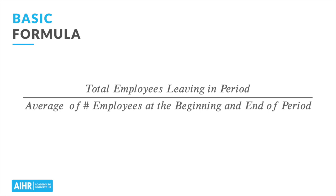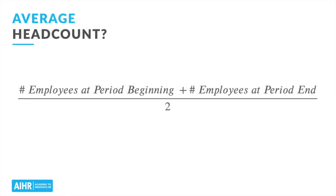Before we work through some examples, I want to focus for a minute on that headcount calculation — the bottom part of our formula — where we're dividing by the average number of employees. Those new to HR analytics often find this step in turnover calculation confusing at first. So let's focus first on that calculation of the average itself. The step is simple: to get the average number of employees during a period, count the number of people employed at the beginning of the period, add that to the number of people at the end of the period, and divide by 2. That's it. Number of employees at the beginning, plus the number at the end, divided by 2. It's just an average.